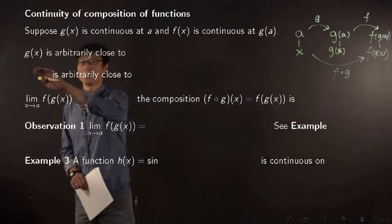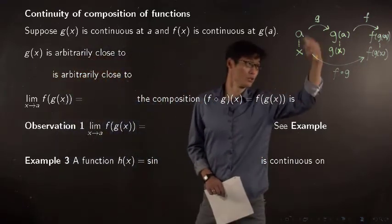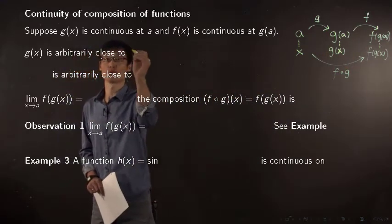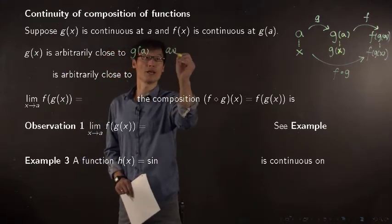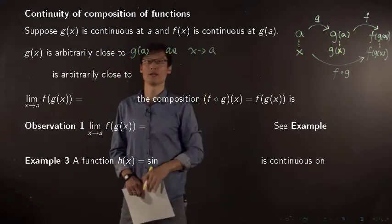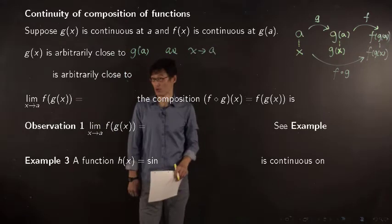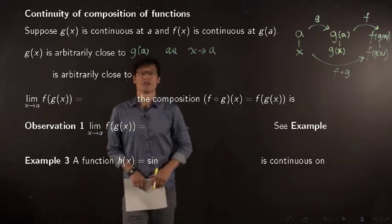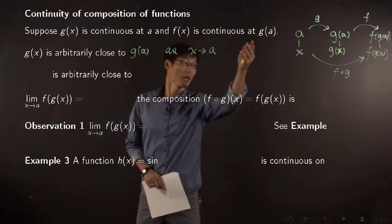Using this diagram, g is very close to g of a as x approaches a. That's the definition of continuity of g at x equals a. And now that f is continuous at g of a,